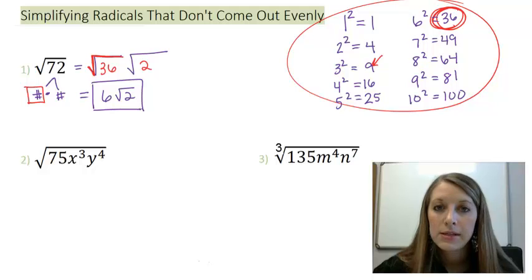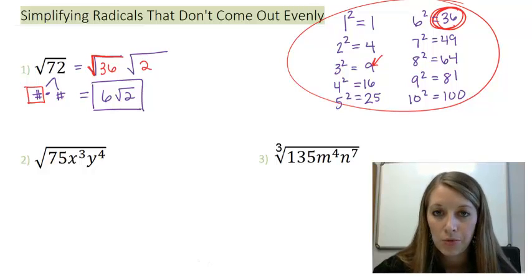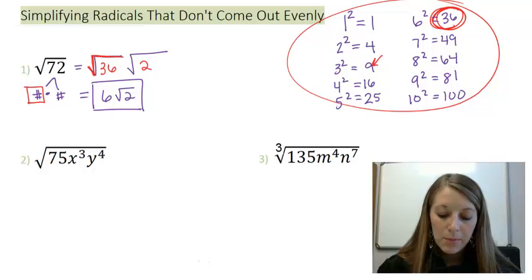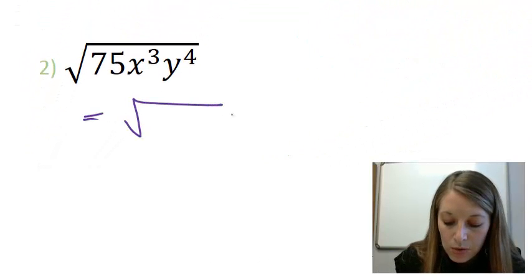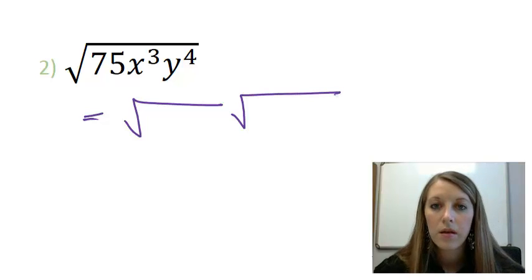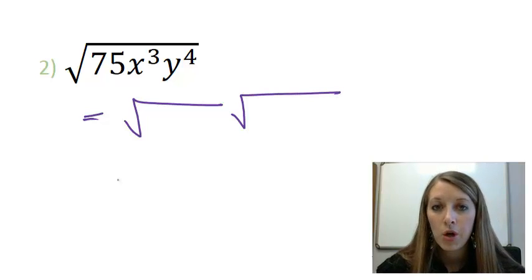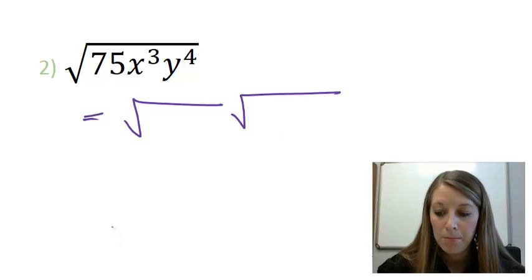So let me walk through example two, since it has numbers and variables all in itself, and then hopefully you can try example three on your own. Example two, I'm going to go ahead and break it down into two square roots right away. The first square root is going to be my good pi, and my second square root is going to be my leftovers or my bad pi.